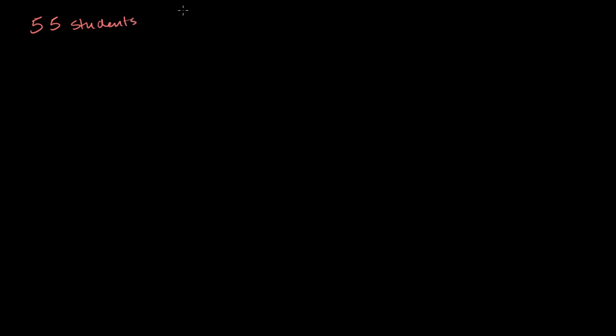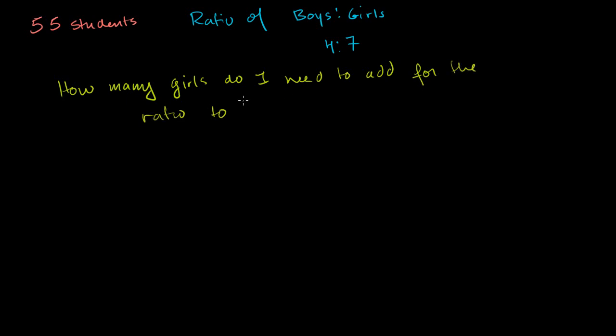And I also know that the ratio of boys to girls is 4 to 7. What I want to know is, how many girls do I need to add? So how many girls do I need to add for the ratio to become 1 to 2?